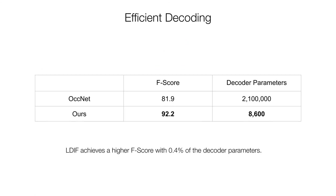An important advantage to LDIF is efficiency. It requires only 8,000 parameters in the decoder compared to 2 million for OcNet. Because of the small number of decoder parameters, LDIF can be evaluated densely on a 128-cubed grid at 20 frames per second.